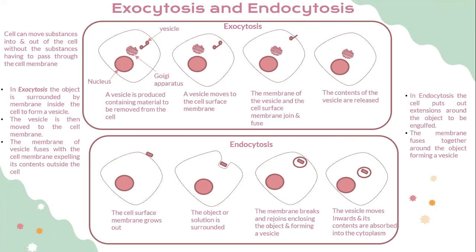Let's look into exocytosis and endocytosis. In exocytosis, cells can move substances out of the cell without those substances having to pass through the cell membrane directly. The object is surrounded by membrane inside the cell to form a vesicle, which is then moved to the cell membrane. The membrane of the vesicle fuses with the cell membrane, expelling its contents outside the cell. The steps are: a vesicle is produced containing material to be removed; the vesicle moves to the cell surface membrane; the membrane of the vesicle and the cell surface membrane join and fuse; and finally the contents of the vesicle are released.